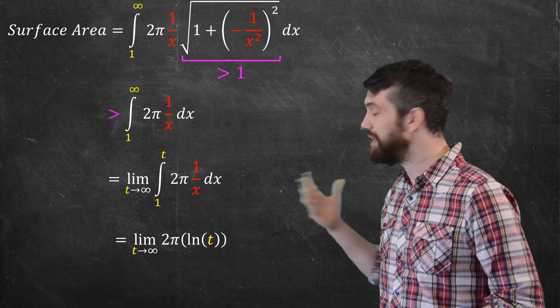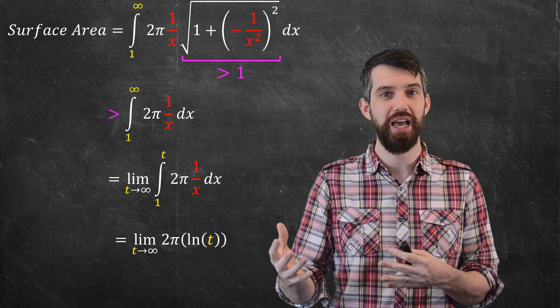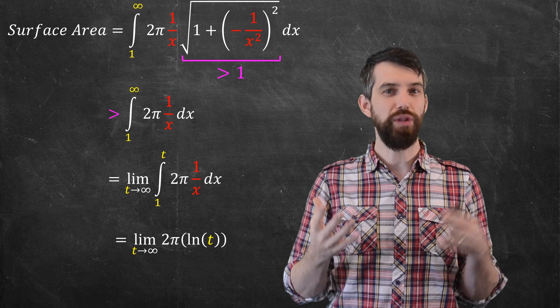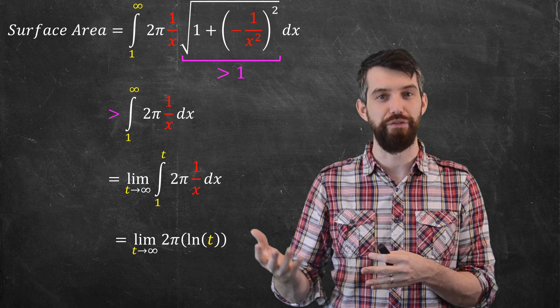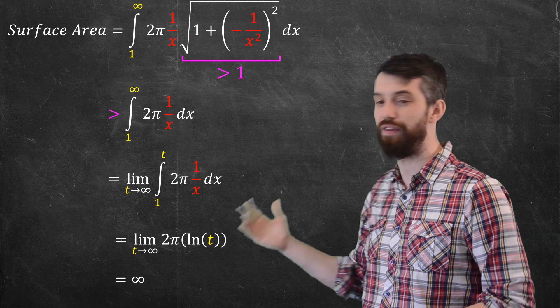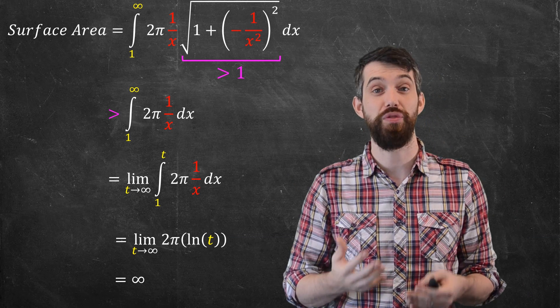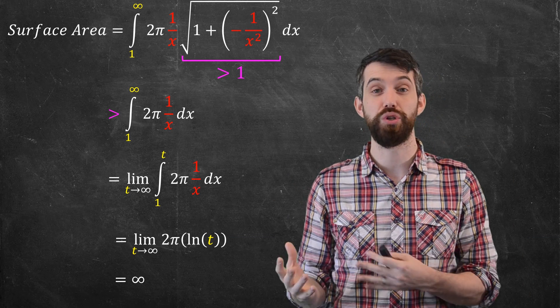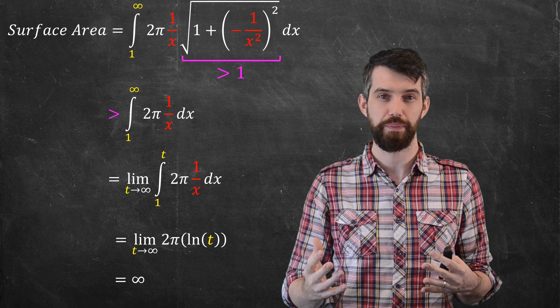Logarithm of 1 is 0. And so, I just get the limit as t goes to infinity of 2 pi logarithm of t. And because of the shape of logarithm, as t diverges, logarithm does as well. So, this is just equal to infinity. So, this is my computation that the surface area of Gabriel's horn is infinite.